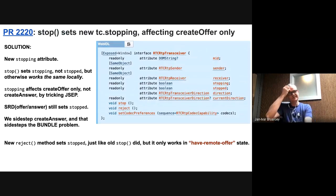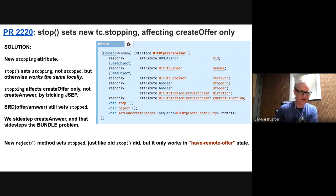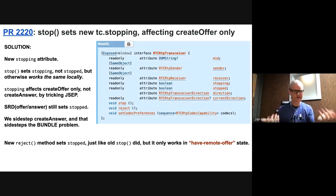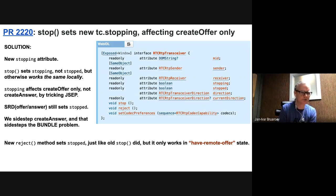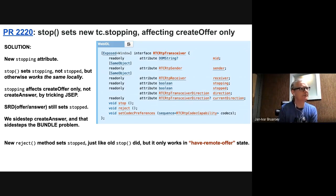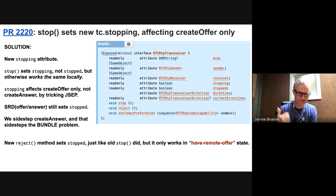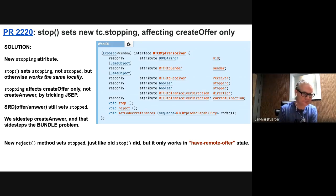So this is the PR we're proposing. The solution is we introduce a new stopping Boolean attribute. Unlike stopped, stopping only affects create offer — not create answer. The stop method will now set stopping instead of stopped, but otherwise work the same locally: you still stop sending, you send RTCP BYE, and you end all your local receiver tracks. We do this by tricking JSEP, because JSEP only had a handful of references to stopped. We add language that says create SDP as outlined in JSEP, with the exception that a stopping transceiver is treated as stopped only in the create offer case.